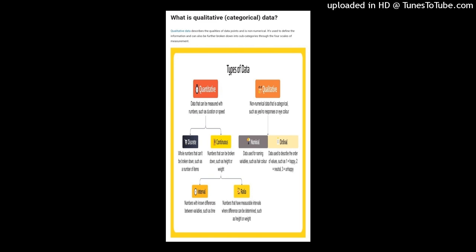Identity refers to each value having a unique meaning. Magnitude means that values have an ordered relationship to one another, so there is a specific order to the variables. Equal intervals mean that data points along the scale are equal — so the difference between data points one and two will be the same as the difference between data points five and six. A minimum value of zero means the scale has a true zero point — for example, degrees can fall below zero and still have meaning.